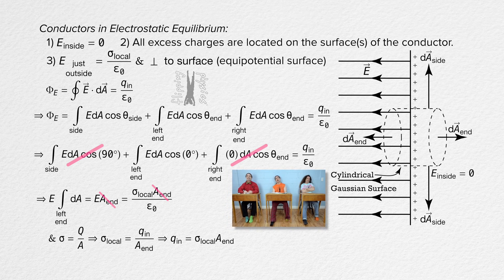And the electric field just outside a conductor in electrostatic equilibrium equals the surface charge density right at that location over the permittivity of free space. Thank you, Bo, well done!